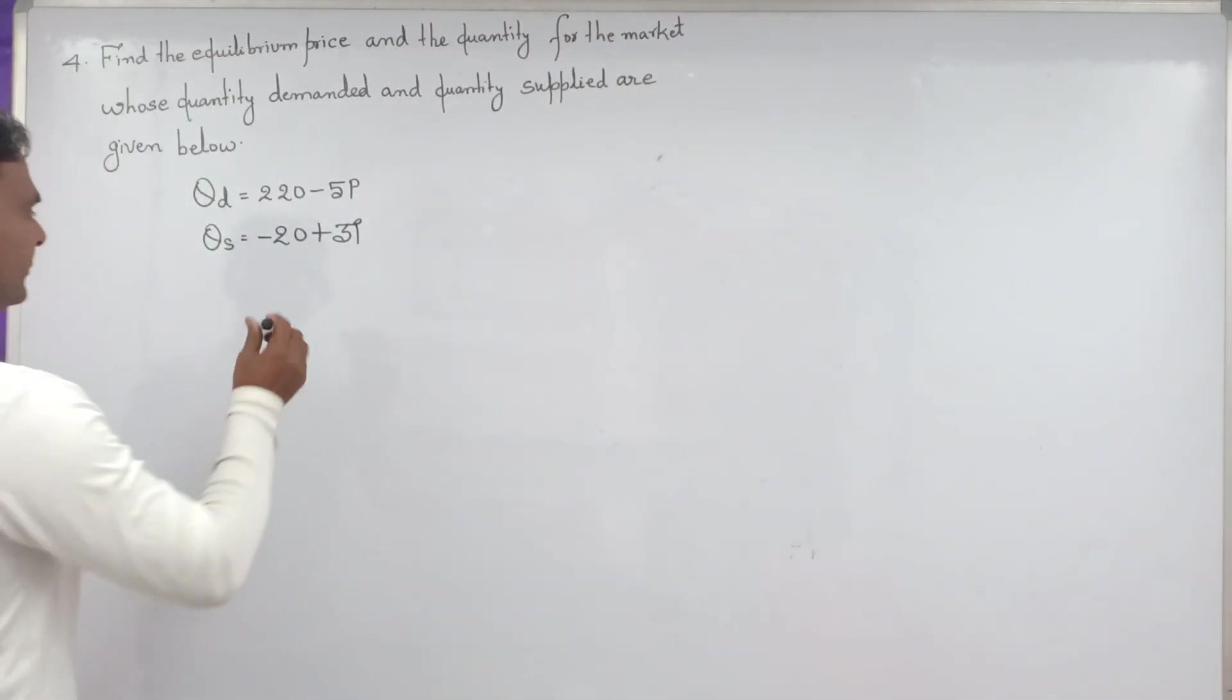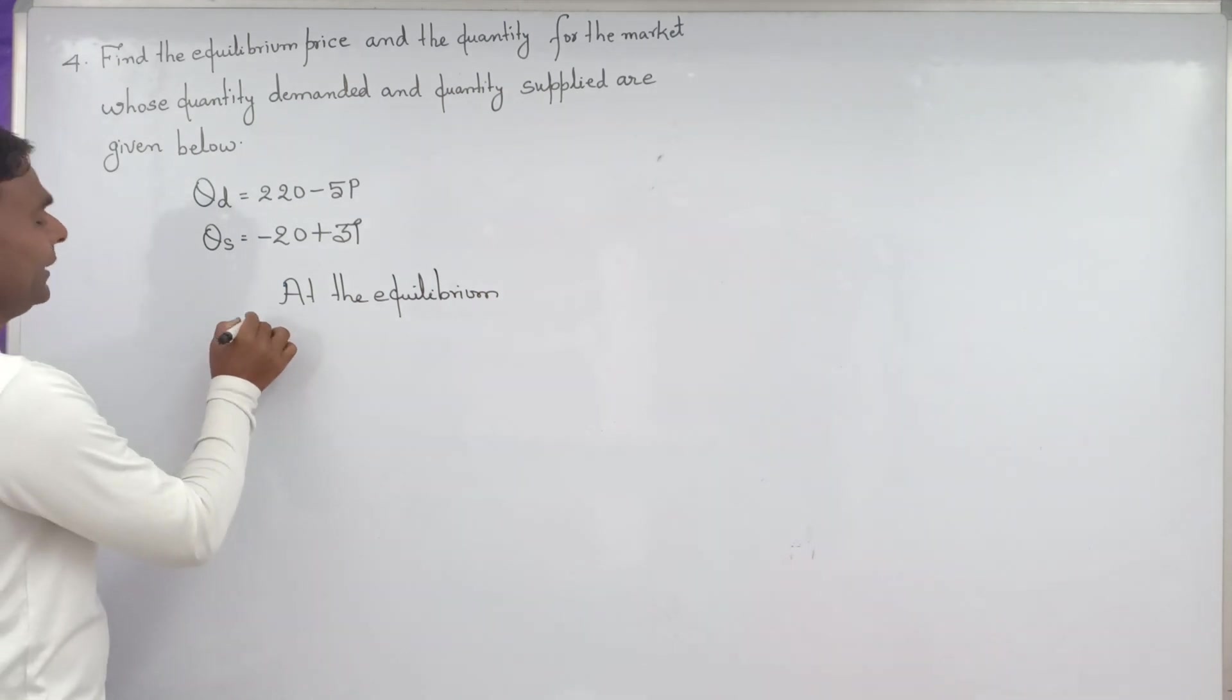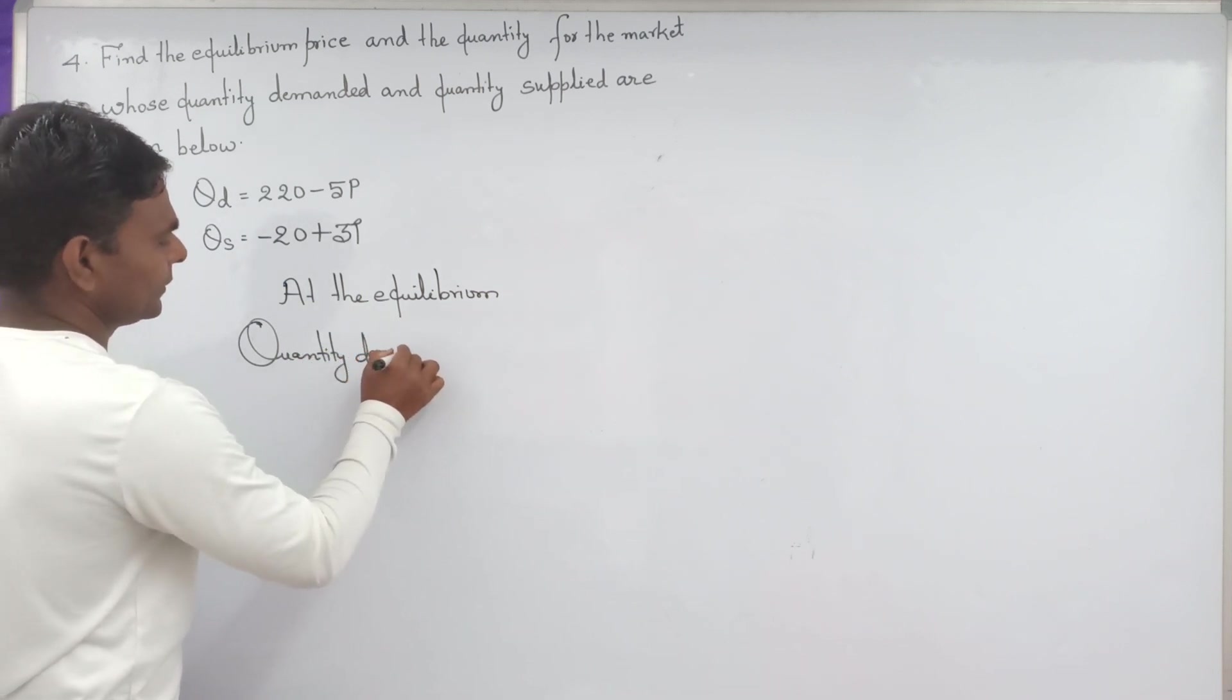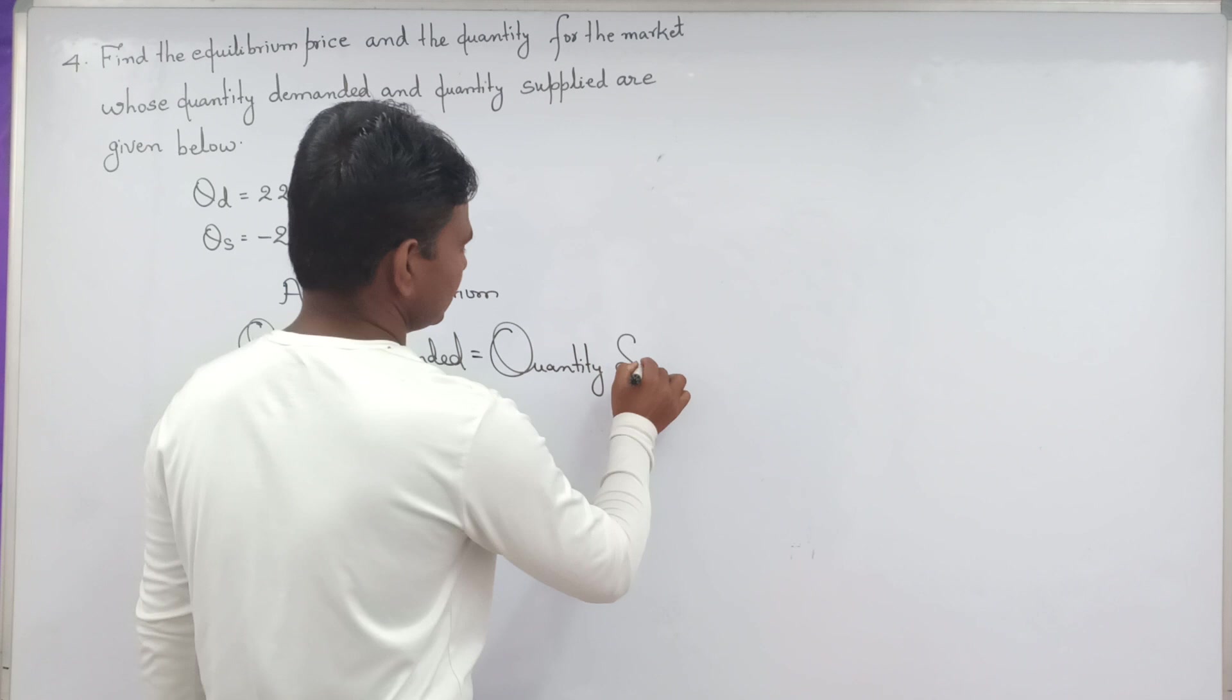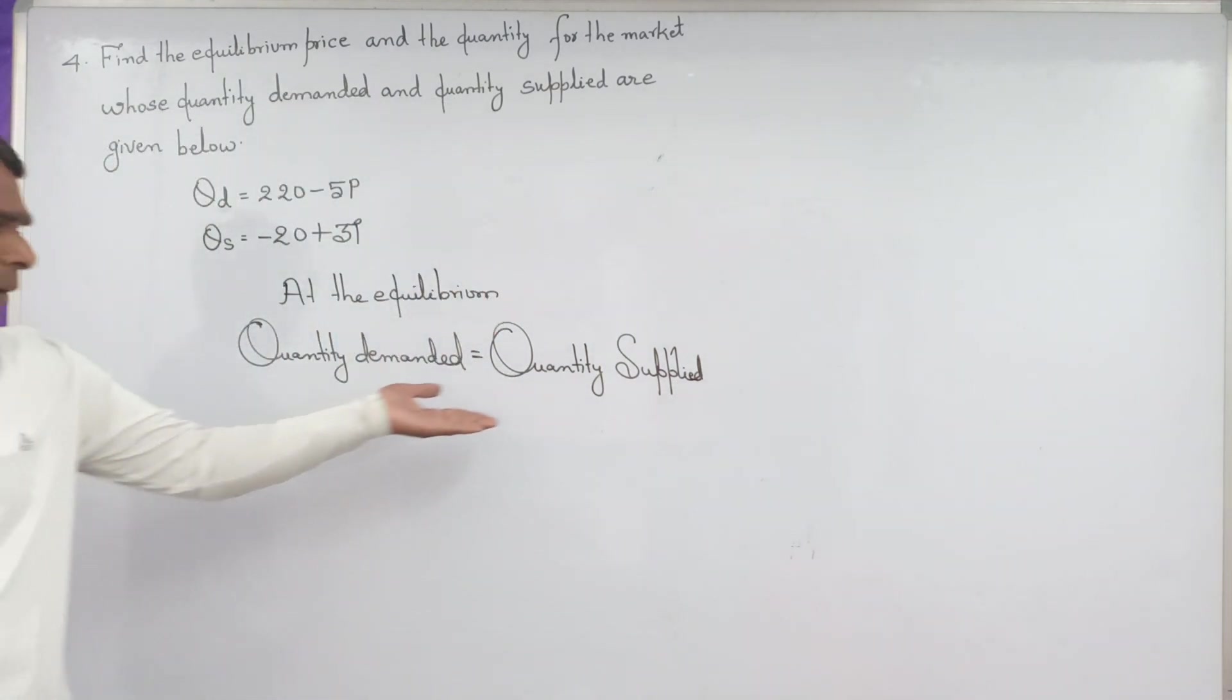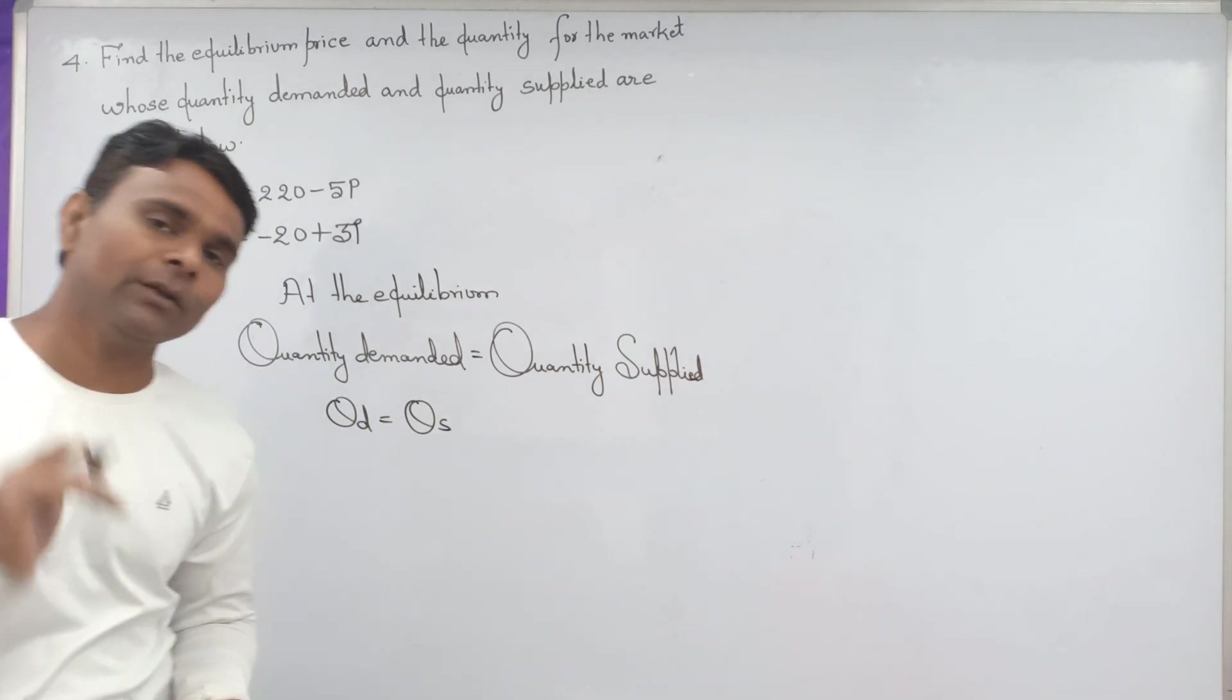It is very easy. First, at the equilibrium level, quantity demanded equal to quantity supplied. That is QD equal to QS. QD is denoting quantity demanded, QS is denoting quantity supplied.